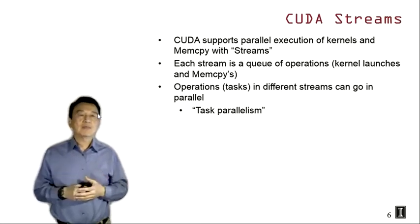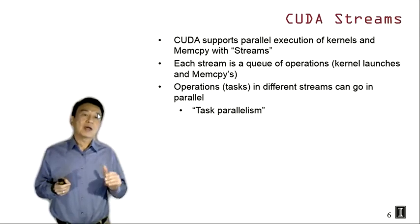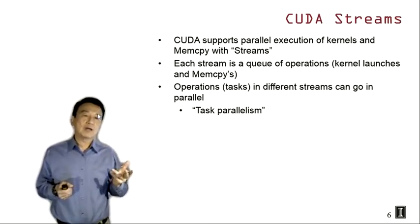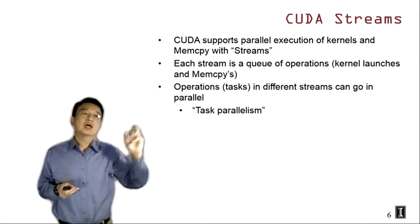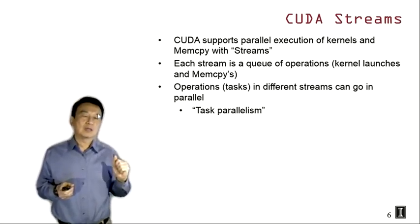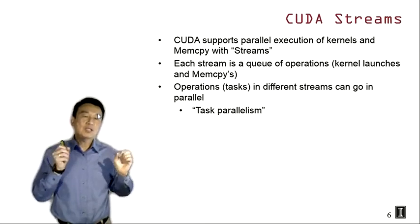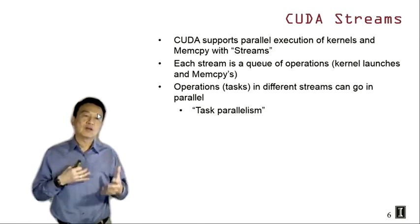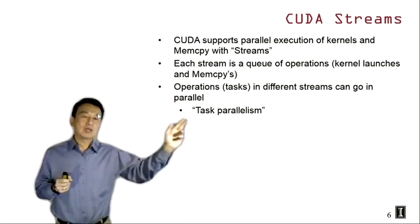This brings us to the concept of CUDA streams. CUDA streams is a simple hardware mechanism — one of the simplest mechanisms available — that supports the exploitation of task parallelism. In CUDA, we can support parallel execution of kernels and memory copies with the concept of streams. Each stream is really a queue of operations: kernel launches, memory copies, and so on. These operations are called tasks in the formal literature. Tasks in different streams can execute in parallel — operations belonging to different streams could go in parallel, though whether they actually do depends on the limitations of each practical implementation. By allowing tasks to run in parallel, we exploit task parallelism.